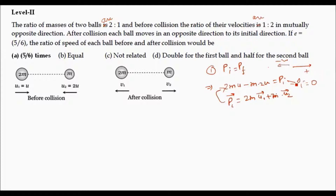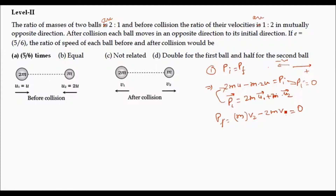Our initial momentum is equal to zero. Now we calculate the final momentum. PF, after considering the sign of the vector, is M×V2 minus 2M×V1. This is the final momentum, and it must equal the initial momentum, which is zero. So PI = PF has already been established.